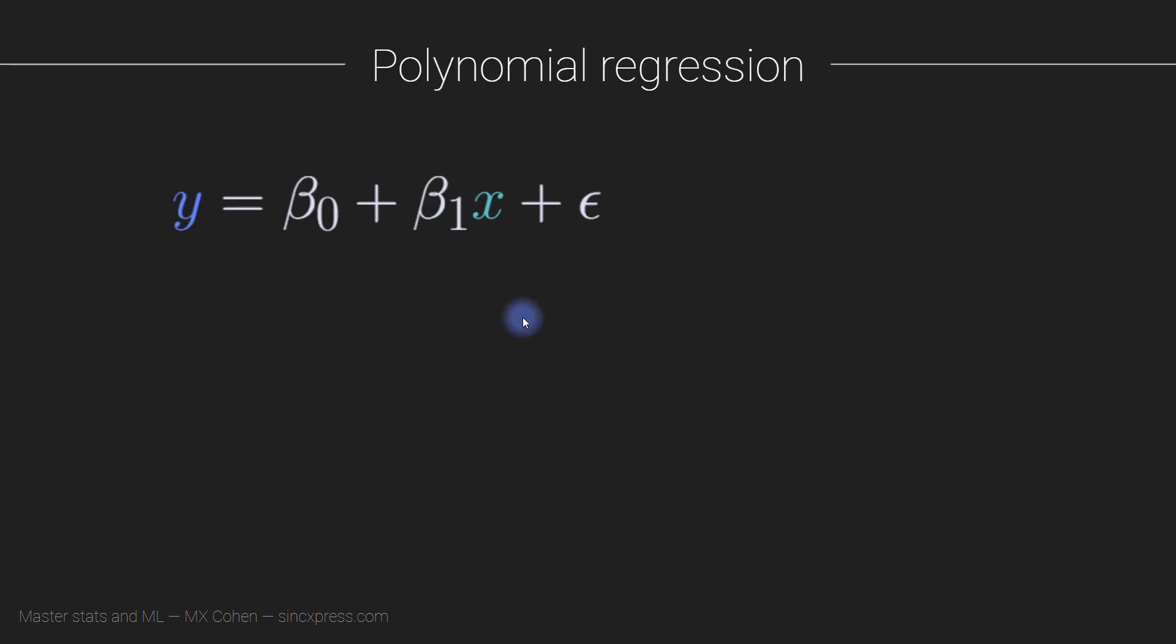Here's a polynomial regression. Technically, this looks like the simple regression that you saw several videos ago. You can see this is beta0 times x to the zero, which earlier I was calling a0, now I call it beta0, and now it's beta1 times x to the power of one. So this simple regression is actually nothing more than a first order polynomial regression.